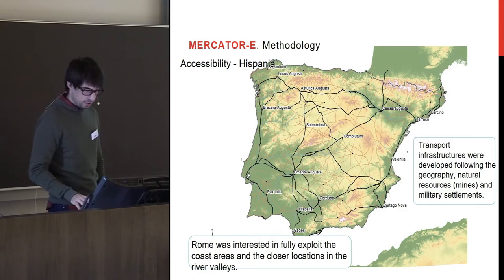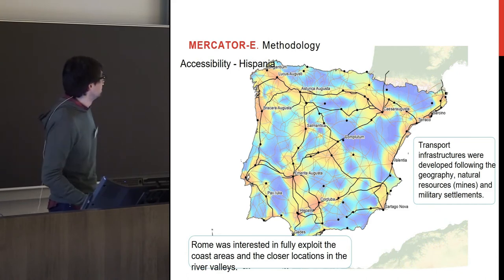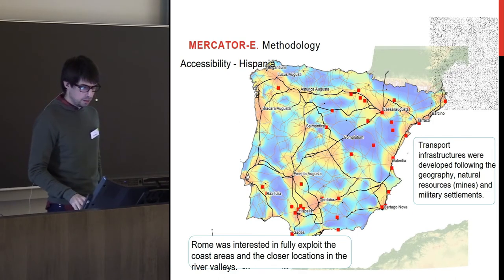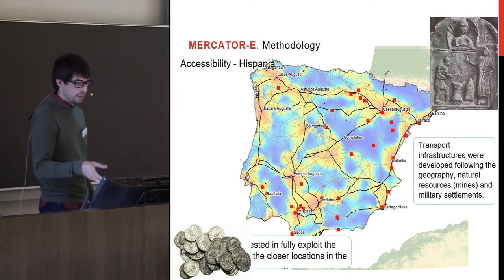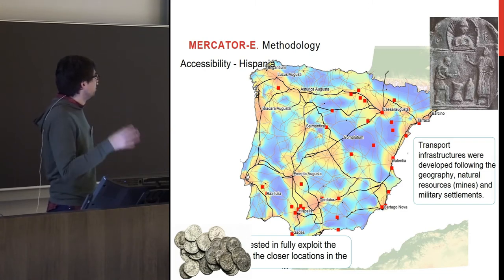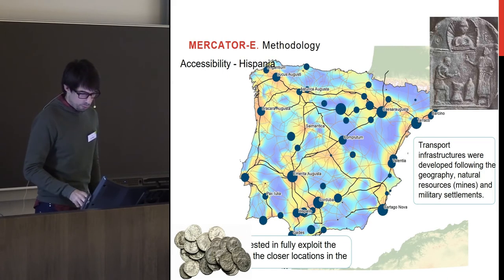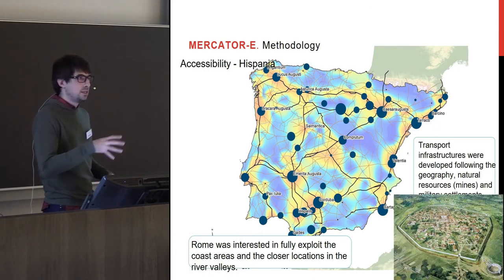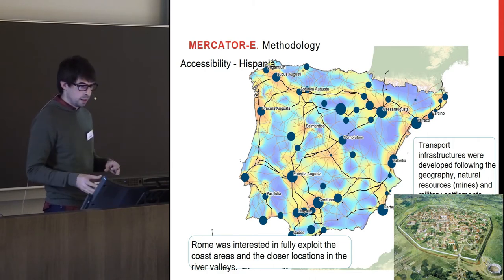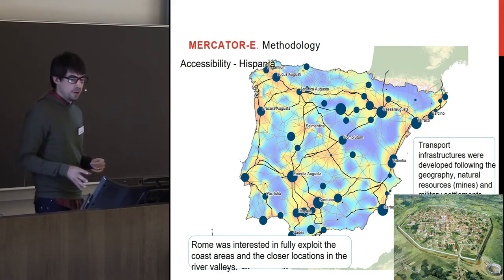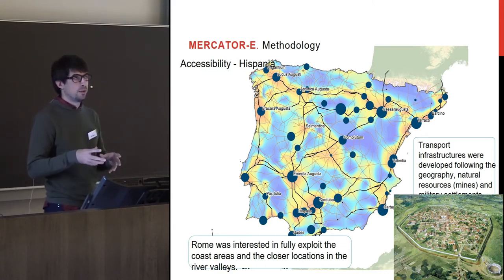This shows all of the roads in Hispania and the connectivity in that area. The idea is that you can compare this with different archaeological elements — in this case, coin finds, most of which were located in the most well-connected areas. We can do the same with city sizes: each circle represents the size of a city, and you can see how most of the biggest cities were always well-connected.